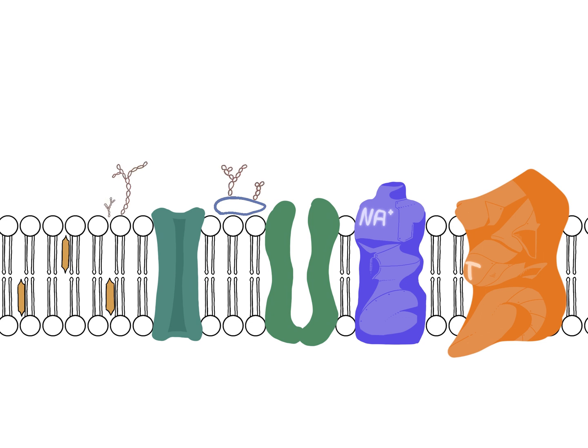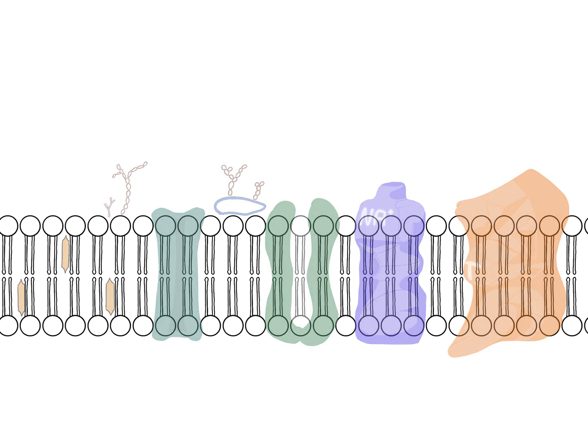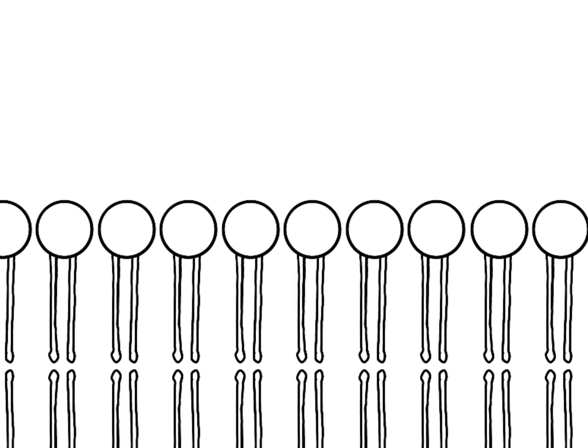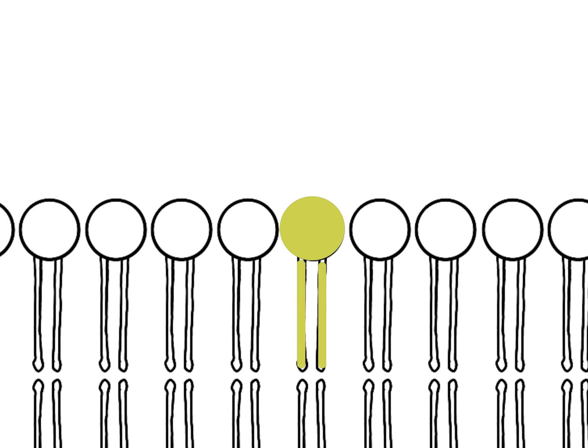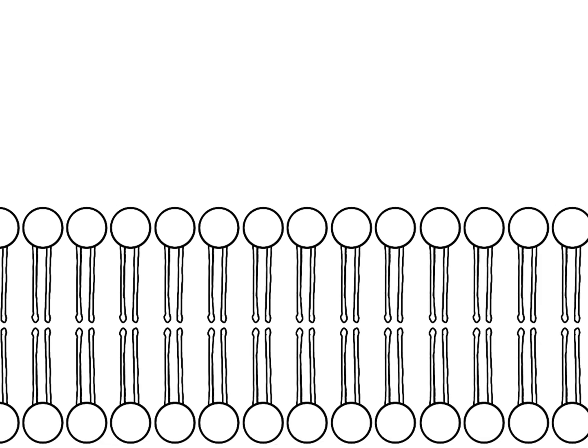First of all, let's take a look at all the components in the cell membrane. The cell membrane itself is made of phospholipids as seen here. A phospholipid has a hydrophilic head and two hydrophobic tails, thus making multiple phospholipid molecules come together and form a bilayer.